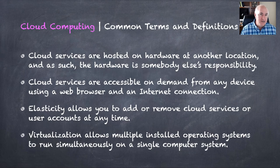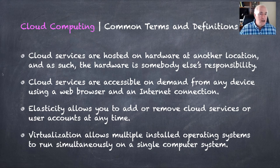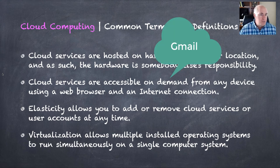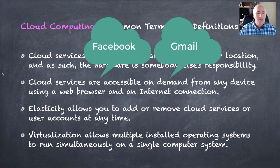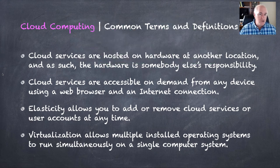Common terms and definitions — there are so many, and the chapter covers a bunch in this section especially, so it's important to take some good notes and write them all down. In general, cloud computing is where the hardware and software you're using are typically somewhere else at another location, and there's someone else's responsibility, accessed over the Internet. Often, a web browser is the client tool you'd use to access the services. Some examples might be Gmail or Facebook — those are cloud services you access over the Internet using a web browser as your client.